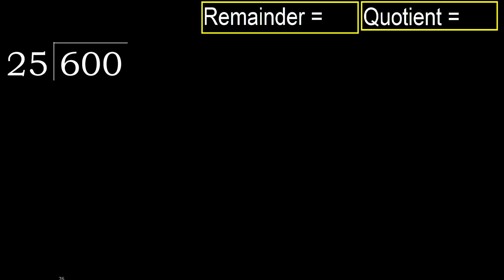600 divided by 25. 6 is less, therefore next. 60 is not less.